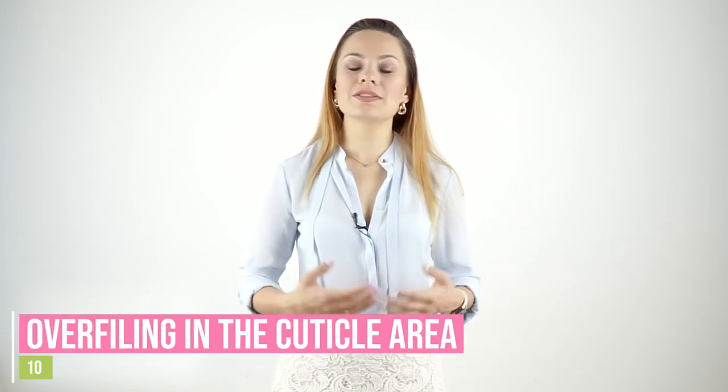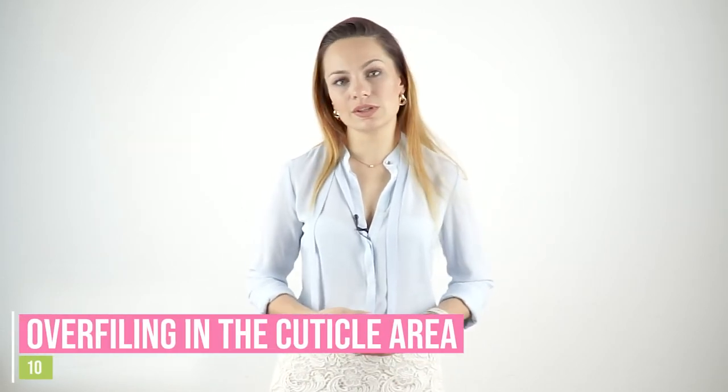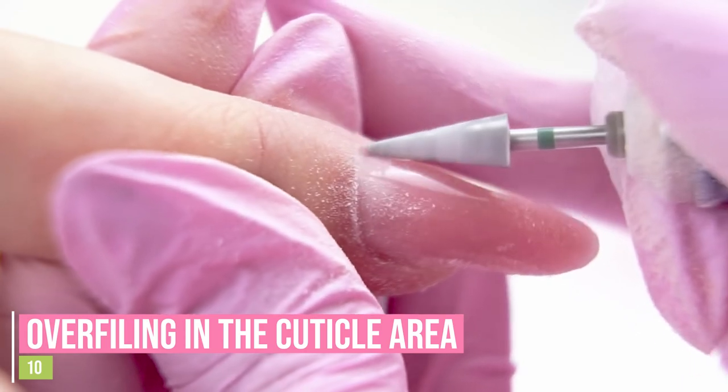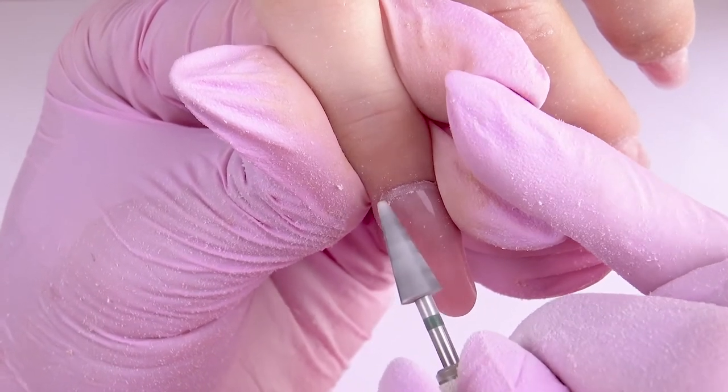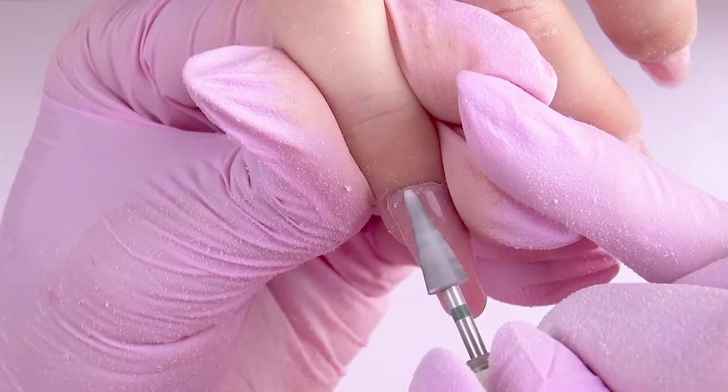The tenth issue is overfiling in the cuticle area. There is so little material left that it can start peeling off during a manicure. Work carefully, don't leave the tip of your drill bit since you can drill through the nails. We only need to remove this visible layering and to smoothen the transition from the natural nail to the artificial material.